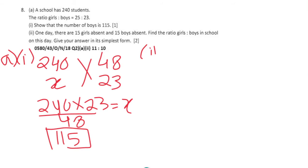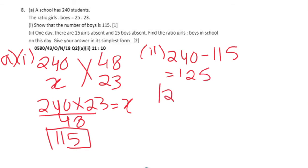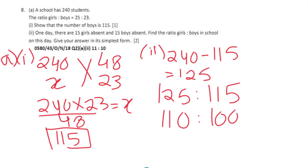Part 2: The actual number of girls is 240 minus 115, which is 125. One day, 15 girls and 15 boys are absent, so the present numbers become 110 girls and 100 boys. Find the ratio of girls to boys in simplest form: divide both by 10, giving us 11:10.